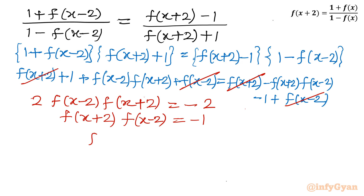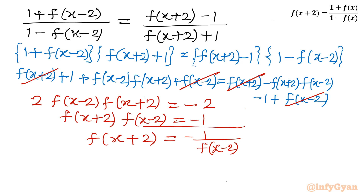From f(x+2)·f(x−2) = −1, we can write f(x+2) = −1 / f(x−2). This is our key functional equation showing the relationship between f(x+2) and f(x−2).